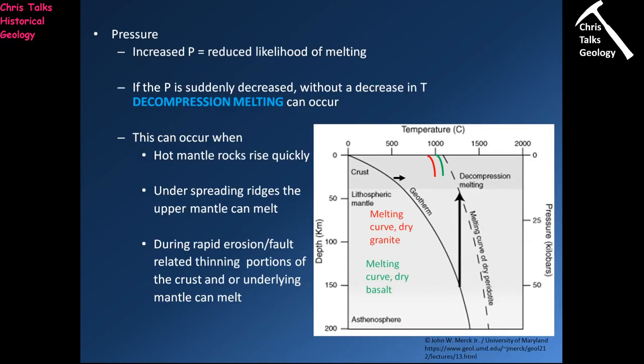The next method of melting is decompression melting — this is when we don't change the temperature but simply drop the pressure. Higher pressure makes it more difficult to melt something; lower pressure makes it easier. If we take a rock under high temperature and high pressure and rather quickly drop that pressure, we have a hot rock under low pressure, and that rock will start melting. That's the basic principle of decompression melting: just drop the pressure and that will induce melting.